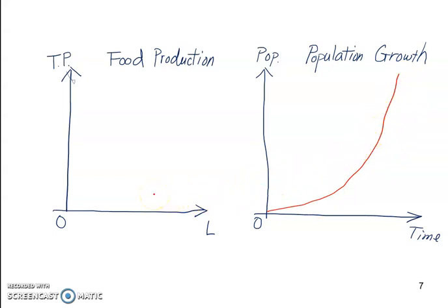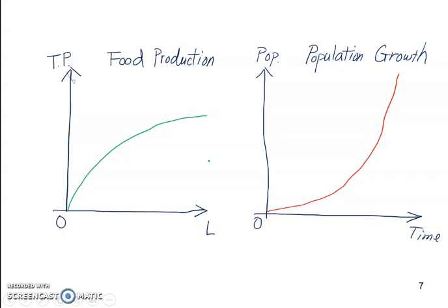You can imagine two parents having four kids, and those four kids each making eight kids the next generation, and so on. However, food production — because of the Law of Diminishing Returns, as we showed on the total product curve — grows more slowly, getting flatter and flatter. When you put these two graphs together, at some point the exponential population growth outpaces food supply and we run out of food, leading to starvation and famine.